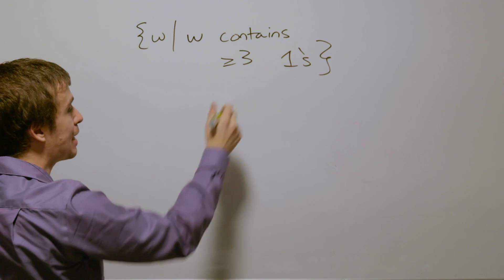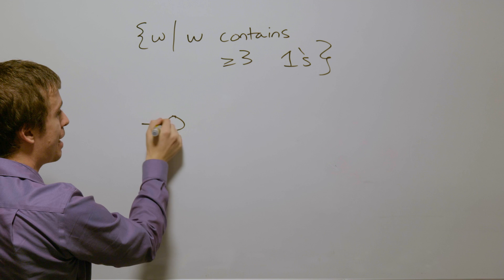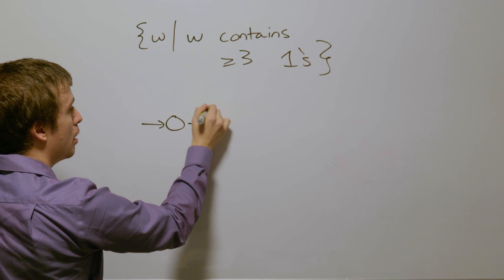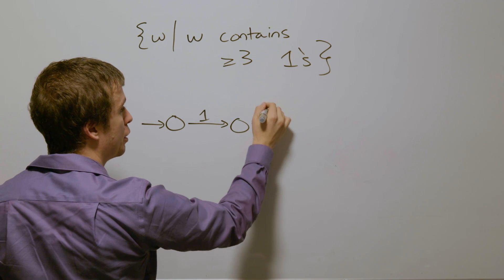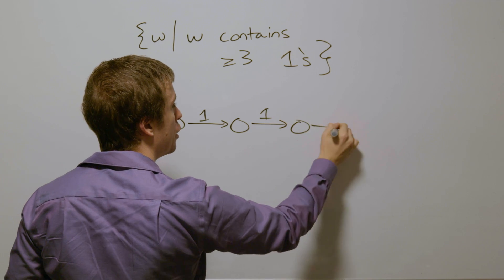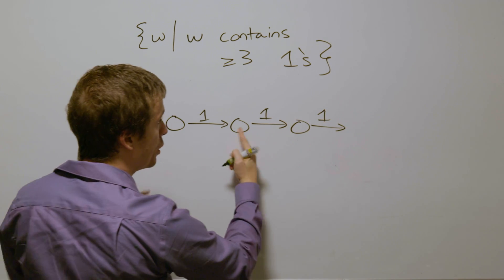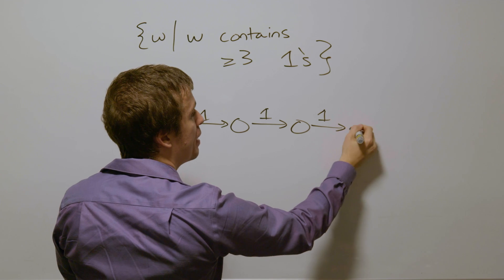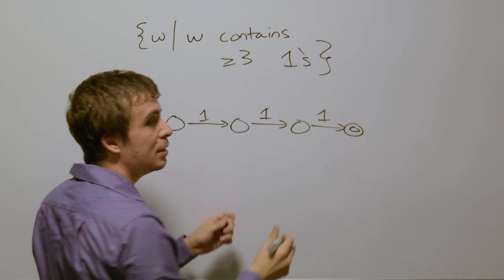So at least three ones, that's just a whole bunch of ones in a row. So here's one occurrence of one, here's another occurrence of one, here's another occurrence of one. And then once we have hit right here, at this point, we have hit three ones.